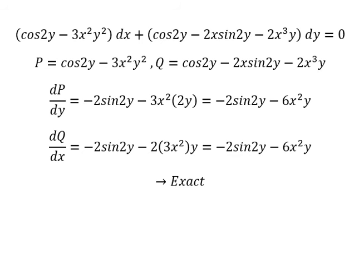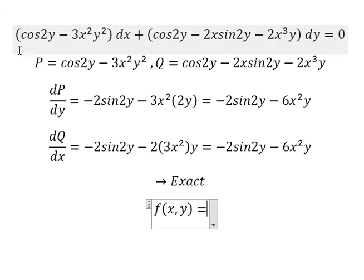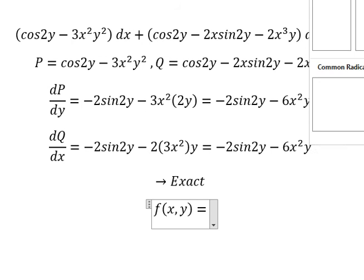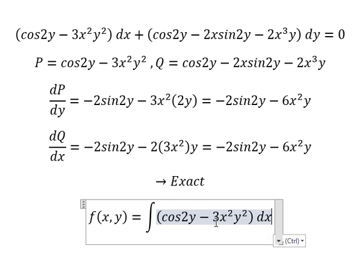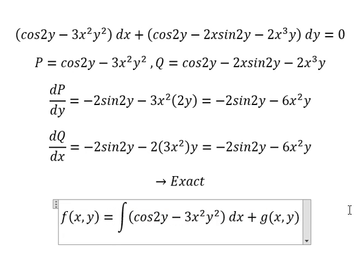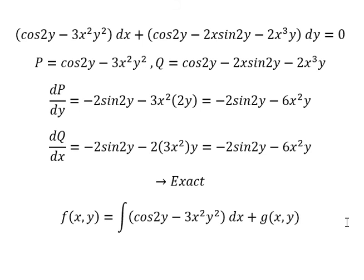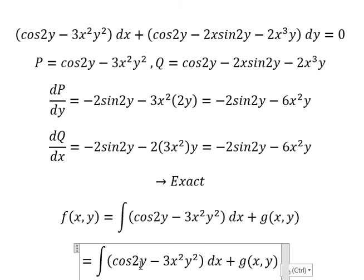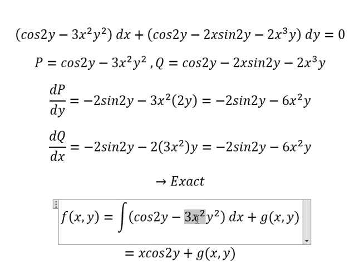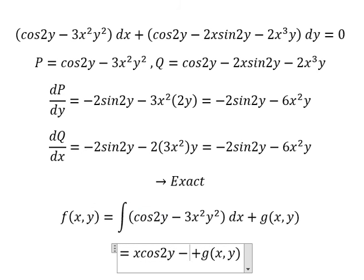Now we need to set up the function F(x,y). I will choose this one plus g(y). The integration of cos(2y) with respect to x gives x cos(2y), and the integration of 3x squared gives negative x cubed y squared.